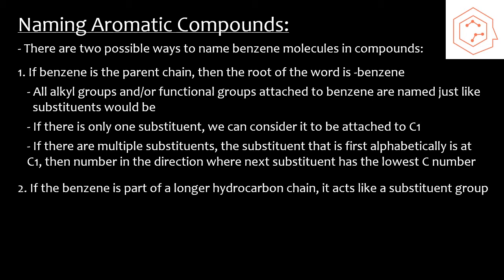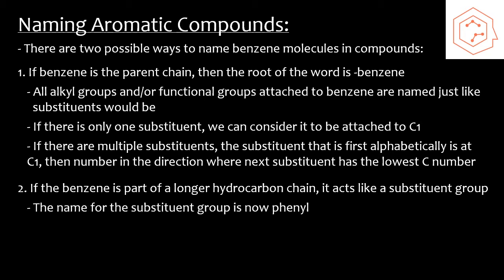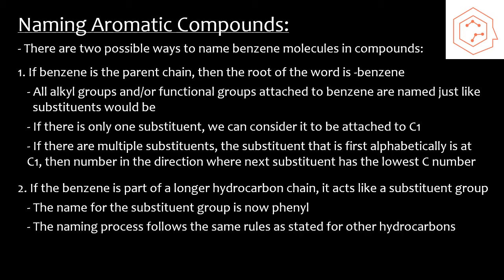If benzene happens to be part of a longer hydrocarbon chain, or one that might contain a double or triple bond, then benzene is going to act as a substituent group itself. The name for benzene as one of these groups is phenyl, where it has one less hydrogen than normal benzene. We'd include phenyl with any other substituent groups, and the naming process would go just like what we've already discussed for other hydrocarbons.